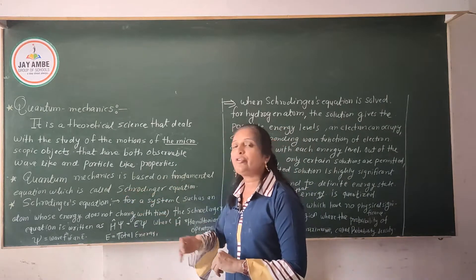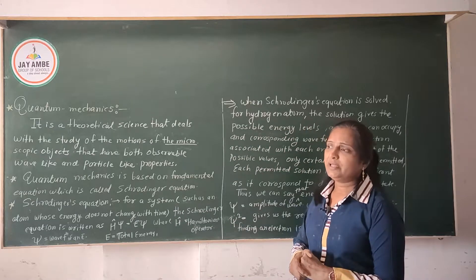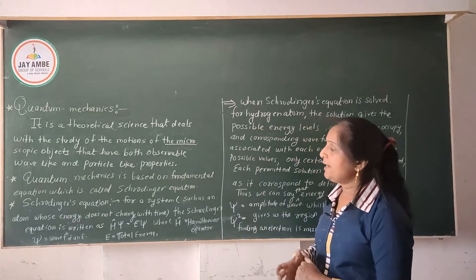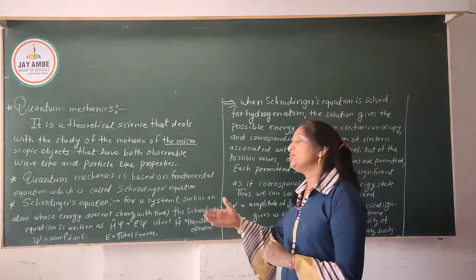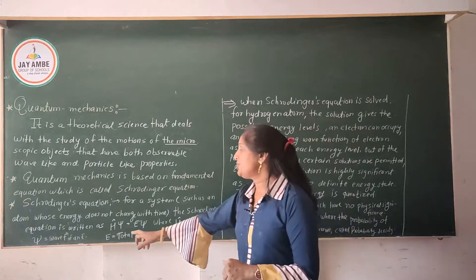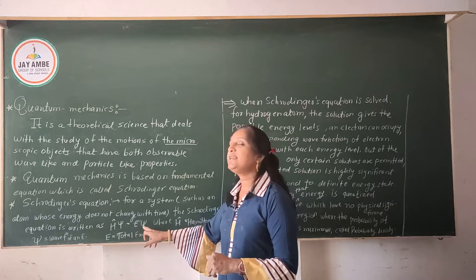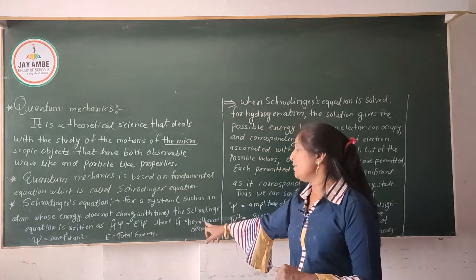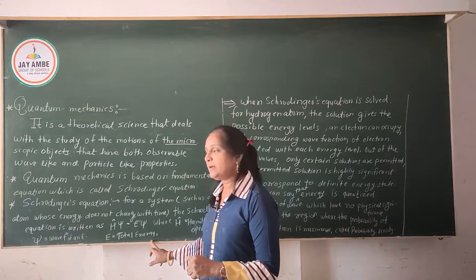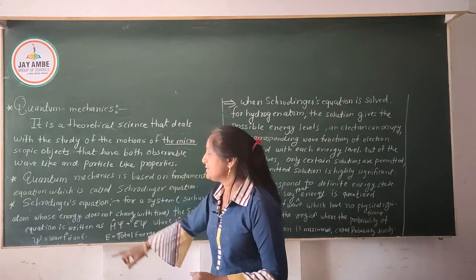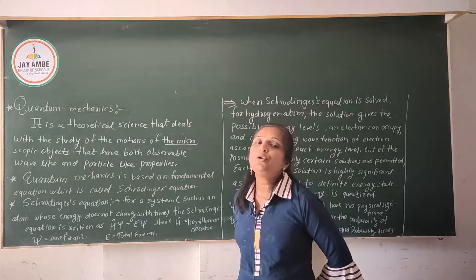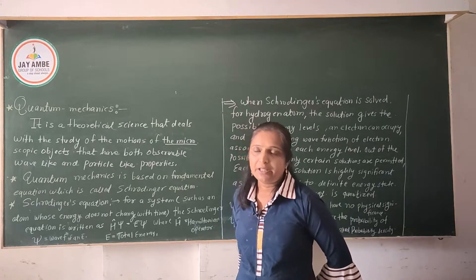According to the Schrödinger equation, for a system — such as an atom or molecule — whose energy does not change with time, the quantum wave equation is written as Hψ = Eψ, where H is the Hamiltonian operator, E is the total energy of the system, and ψ is the wave function of the electron.